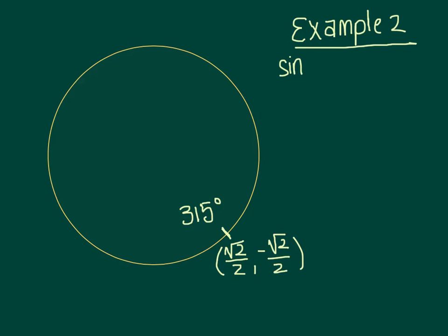So we know that the sine of 315 degrees, well that's the y, so that's the negative square root of 2 over 2. And then the cosine of 315 degrees is going to be the x, which is the positive square root of 2 over 2.